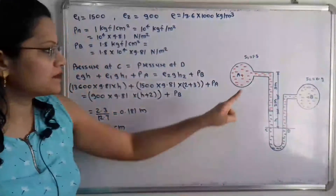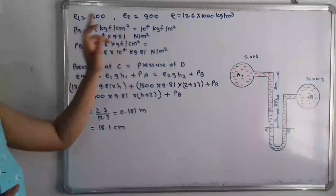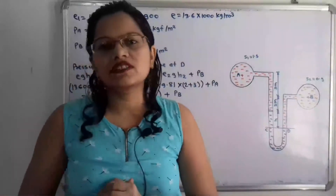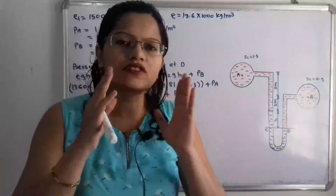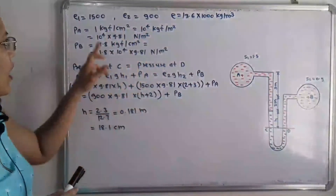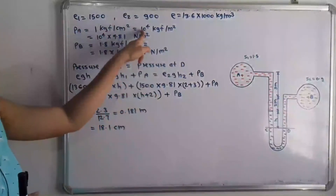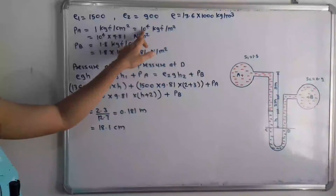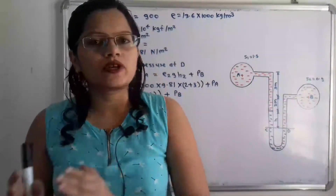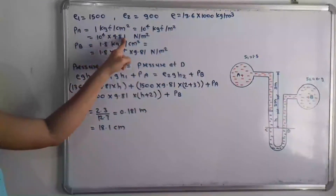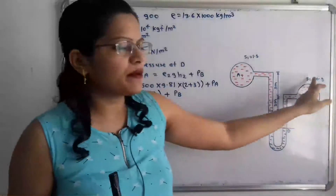The pressures at pipe A and pipe B are also given. PA = 1 kgf/cm², which we must convert to the standard unit of N/m². To convert, we change cm² to m² by multiplying by 10⁴, giving 10⁴ kgf/m². Then we convert kgf to newtons by multiplying by 9.81, so PA = 10⁴ × 9.81 N/m².